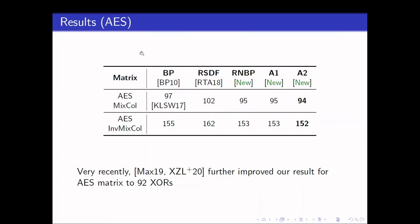Next, we also ran our algorithm on the AES mixed column matrix. And with A2, we managed to obtain a circuit of 94 XOR. Very recently, two papers have further improved our results for AES matrix to 92 XOR.